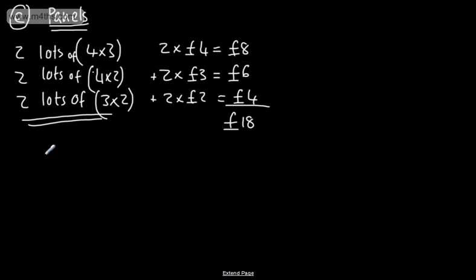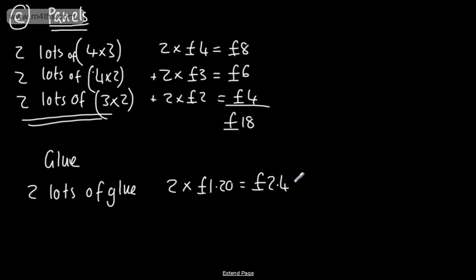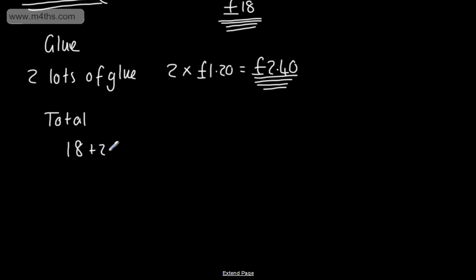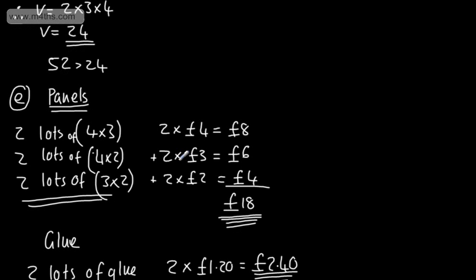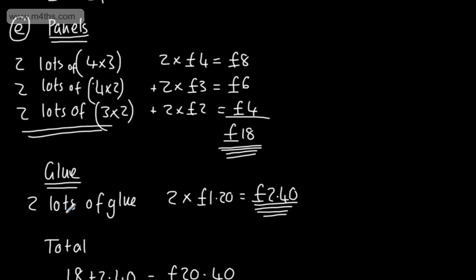It's clear what I'm doing here. So glue, we need now 2 lots of glue. So 2 lots of glue. So nice and clear to the examiner what I'm doing. So we're going to have 2 lots of 1 pounds 20. That's going to be equal to 2 pounds 40. So I've got now the cost of my panels. I've got the cost of my glue. I'm just going to write now the total. We can add it in column form, or we can just simply add them together. We're going to have 18 plus 2 pounds 40. And that is going to give me 20 pounds and 40 pence. So that now is my final answer. That's what it's going to cost Rob to build the box if he wants to go out and do that. You can see clearly this is set up. We have the panels. We have the glue. And we have the total.